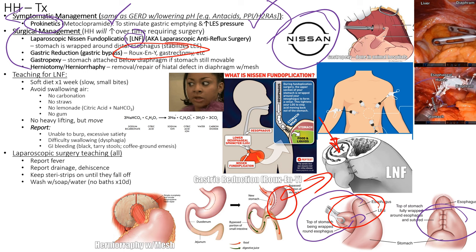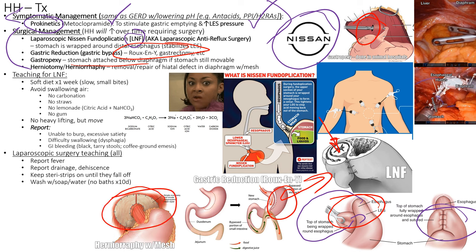Gastropexy attaches the stomach directly to the undersurface of the diaphragm to prevent re-herniation — used in veterinary medicine too. Herniorrhaphy involves reducing the hernia and placing surgical mesh to tighten the hiatus, since fat infiltration in obese or older patients weakens the opening. The mesh prevents future herniation through the hiatus.